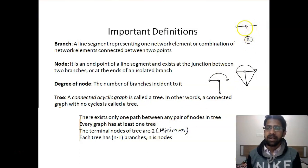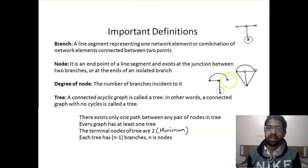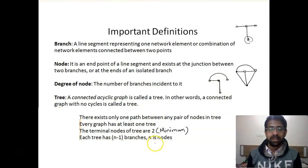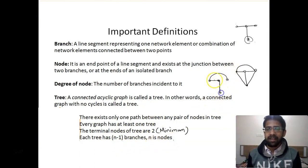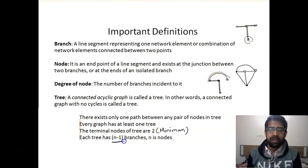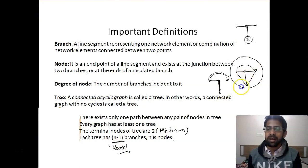In one tree there are three terminal nodes, while in another there are two terminal nodes, each connected to only one branch. Each tree has n minus one branches and n nodes. As you can see, here there are four nodes and three branches, and in the other tree also four nodes and three branches. N minus one is also called the rank of the tree, and ultimately this is also the rank of the original graph.